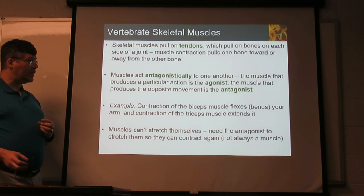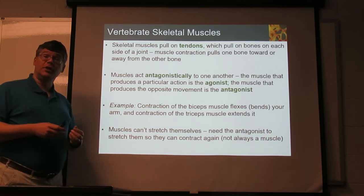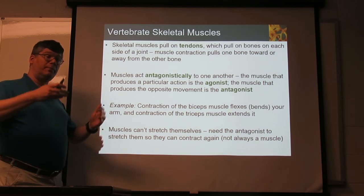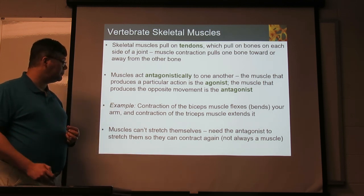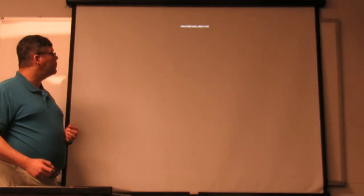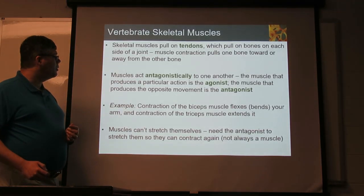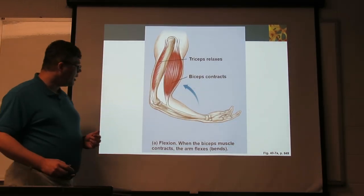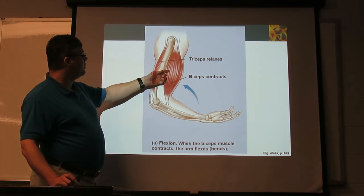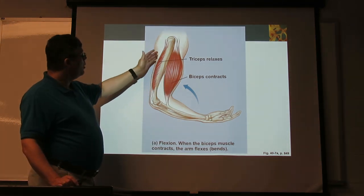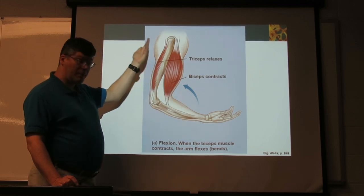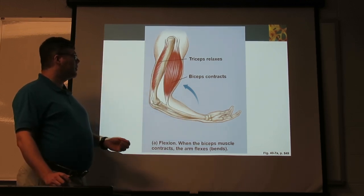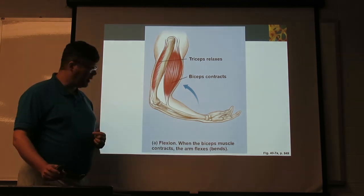It's not always another muscle — you can have a flexible tissue that can stretch instead, and then the tissue bends back. In the diagram version, the bicep is contracting while the triceps is not, bending the arm towards the biceps. Then the triceps can contract and bend it back the other way.